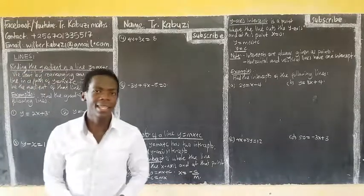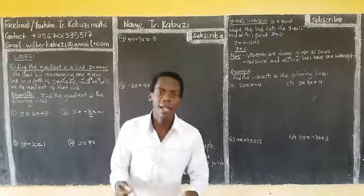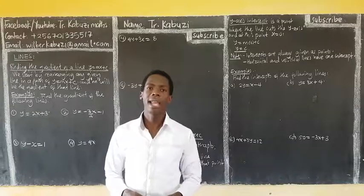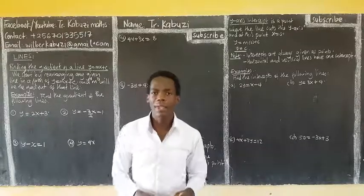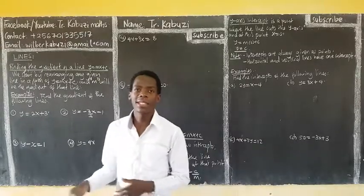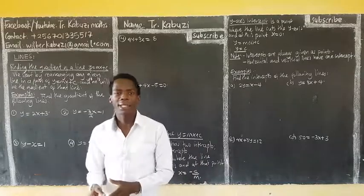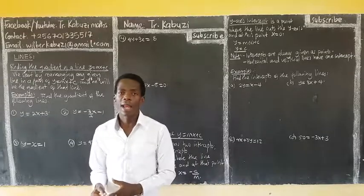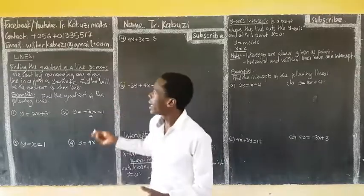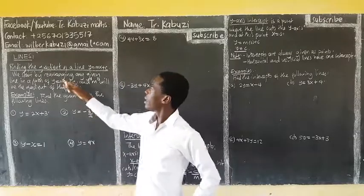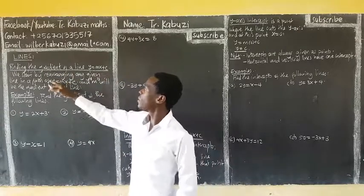Now we're going to see how we get the gradient of a line in any form. In this lesson, I'm going to see how we get the intercept of a line and also how we get the gradient of a line. Let us start with finding the gradient of the line in this form.